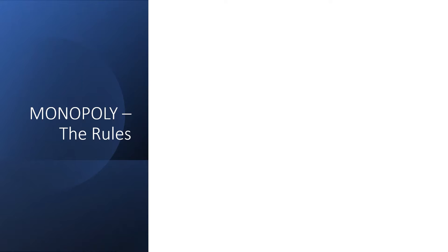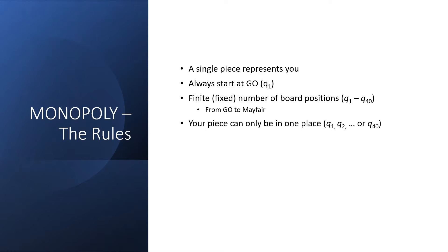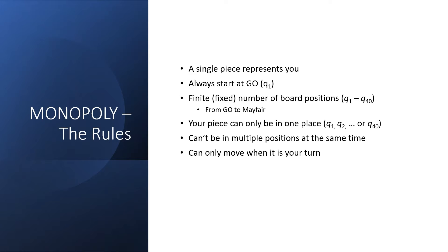It turns out we have a lot of intuitive knowledge about Monopoly. We know that a single piece represents you. You always start at Go, which is Q1. There are a finite or fixed number of board positions, Q1 through Q40, which is Go to Mayfair. Your piece can only be in one place at a time, so it can only be in Q1, Q2, or any other position up to Q40. You can't be in multiple board positions at the same time. And you only get to move when it's your turn. The current position and the dice roll determines what to do next.